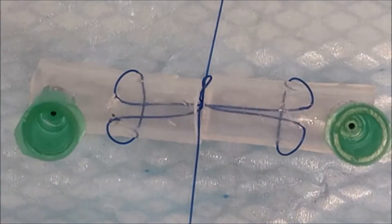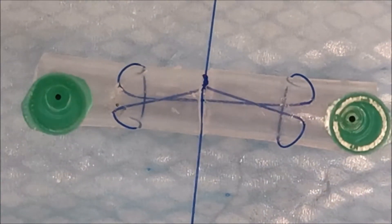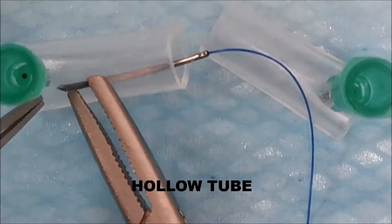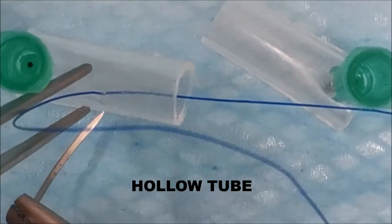When you pull your knot tight, do it perpendicular to the tendon ends and it will bury your knot inside the tendon ends. The next technique is a four strand cruciate.